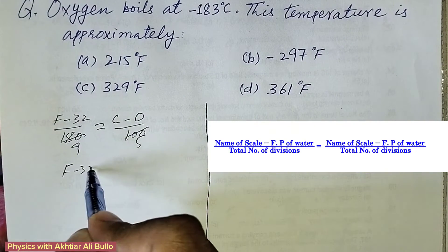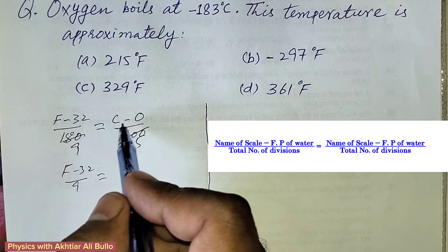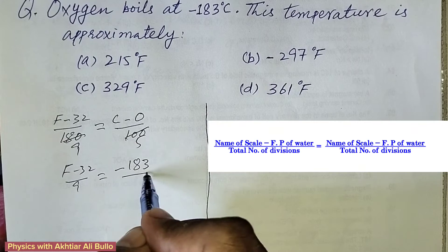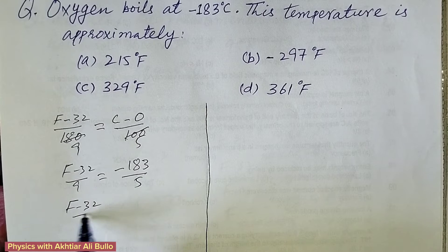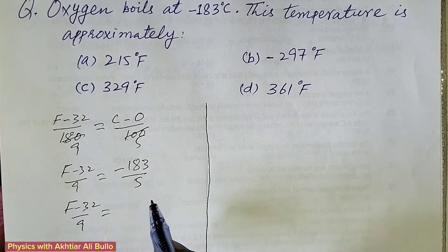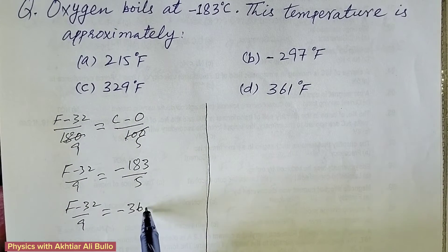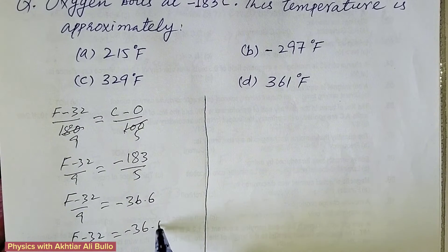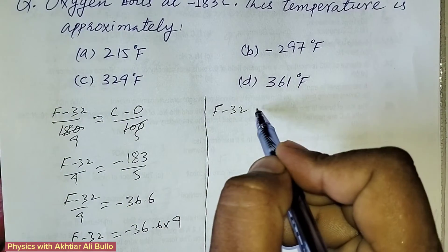So (F minus 32) / 9 = C / 5, where the temperature in Celsius is minus 183. Substituting: (F minus 32) / 9 = minus 183 / 5, which gives minus 36.6. Therefore, F minus 32 = minus 36.6 multiplied by 9.